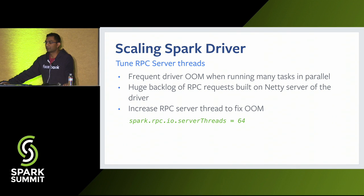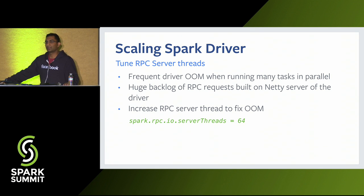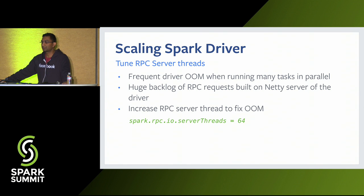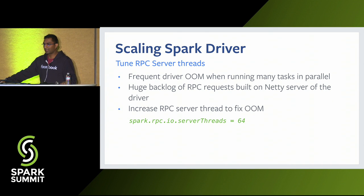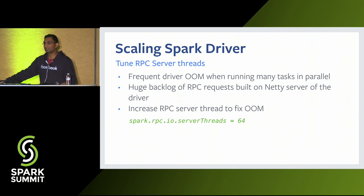Next is tuning for RPC server threads. While running jobs at scale, we observed that the driver was frequently running out of memory (OOM). Looking into the driver heap dump, we found a huge backlog of RPC requests built up on the driver, consuming most of the driver memory. The default number of RPC server threads, which is set to eight, is too low for running large jobs. Increasing the number of threads can help get rid of OOM and allow jobs to run stably.